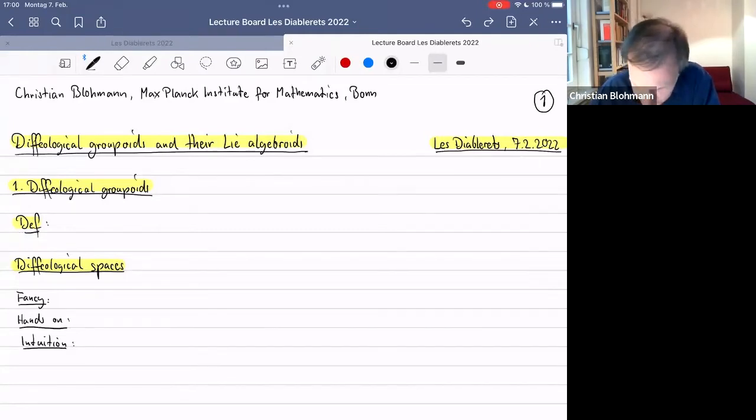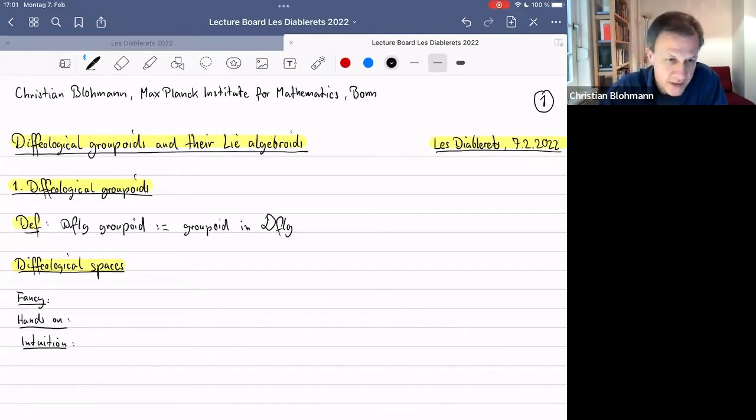Okay, so diffeologic groupoids and their Lie algebroids. I'm going to at the very least have to explain the words. It's very easy to say what a diffeologic groupoid is. So that's simply in the most basic definition, a groupoid in the category, denoted DFLG, of diffeological spaces. So that's a quick definition, but it's not good enough to do geometry. You need additional properties from your groupoid to have it nicely algebraic.